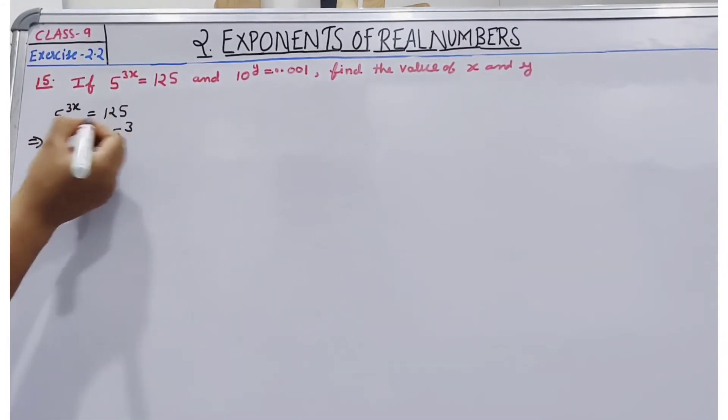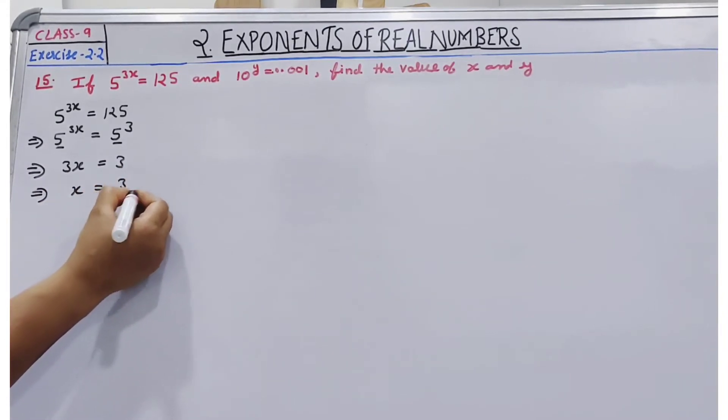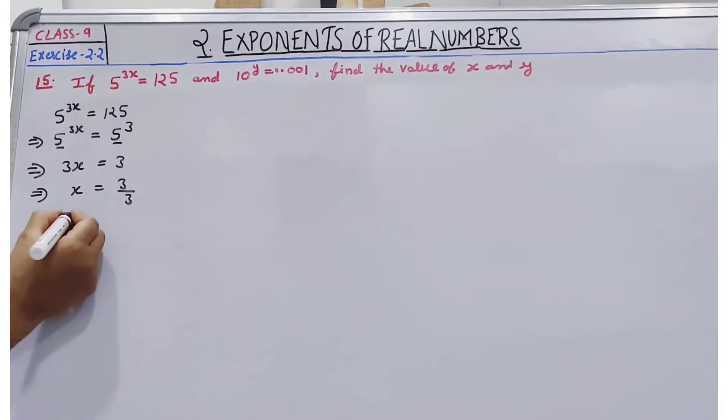Now our base is the same, so we can equate the powers. So 3x is equal to 3, so x is equal to 3 divided by 3, x is equal to 1.